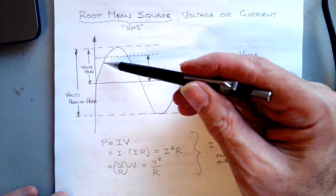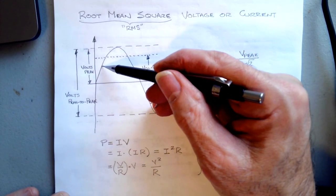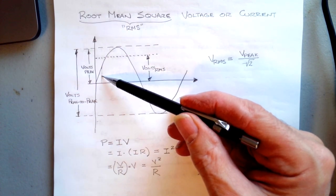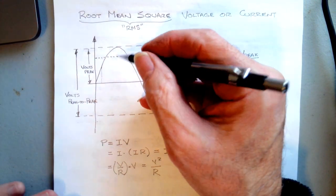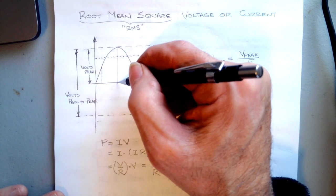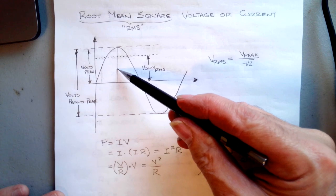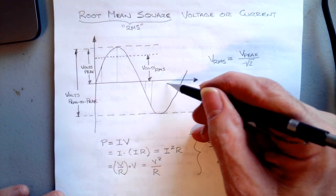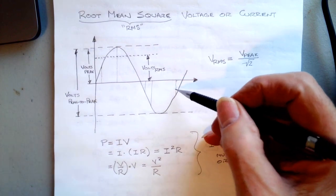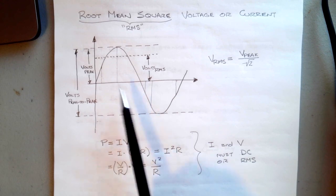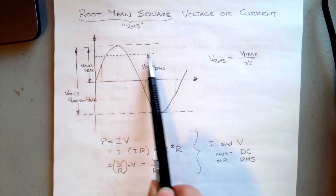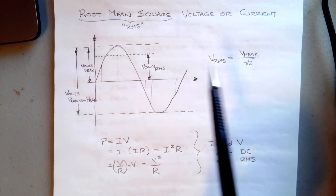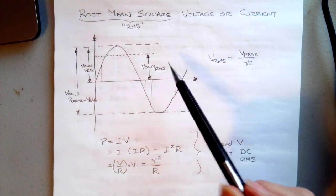I'll show you why. If we want to look at the instantaneous power at some point here with this voltage, we would look at this voltage and we would square it and divide it by the resistance. The instantaneous power at this point—we would square the voltage and divide it by the resistance. If this were DC, we would just have the voltage be a straight line, and the average power we could take—the power at any instantaneous point as V squared over R, or I times R, or I squared times R—and we'd have the power.